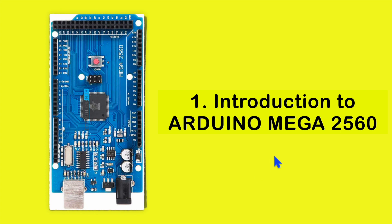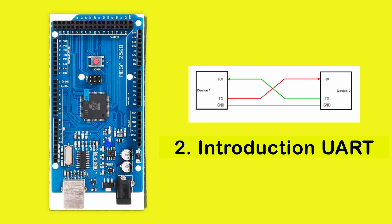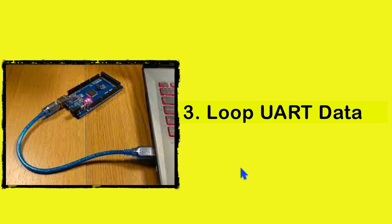The first topic will cover the basics of the Arduino Mega 2560 board — what components we have and what are the roles of those components. Since we have to communicate via the serial port to the SC05 Bluetooth module, we'll have a basic understanding of UART first. Then we'll develop code for this microcontroller that loops data — whatever data we send from our PC will be received by the microcontroller and returned back over the serial port.